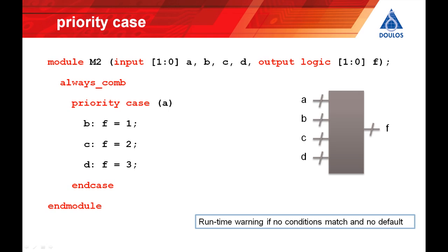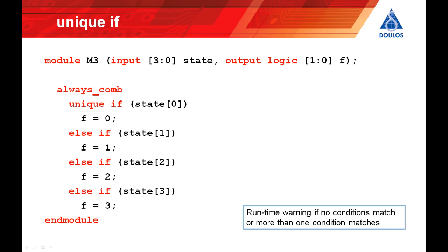The alternative to priority is unique. Like priority unique enforces complete assignment but this time it goes further. Unique requires that the branches of the if statement are mutually exclusive as well as mutually exhaustive. In other words it means that in this example the synthesis tool can assume that only one bit of the state vector will be hot because if more than one bit were hot it would have been picked up with a warning during simulation.